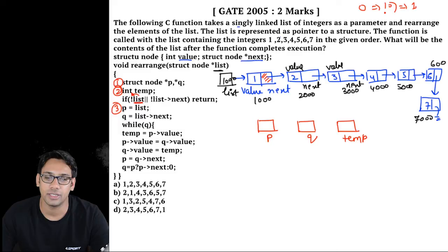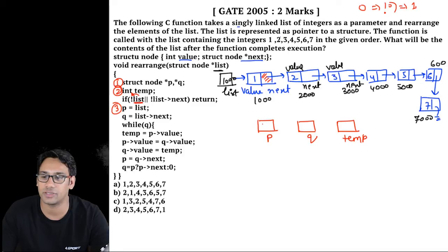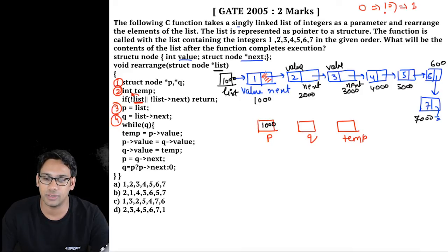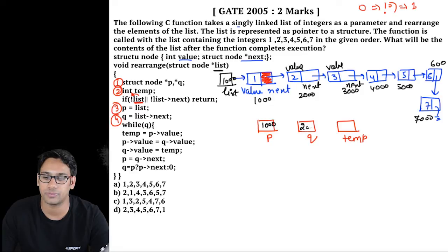In line 3: p = list, so p now stores 1000, pointing to the first node. In line 4: q = list->next, meaning q stores whatever is in the next part of that node, which is 2000. So q is now pointing to the second node.